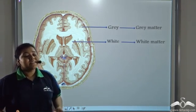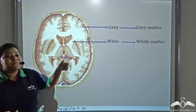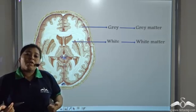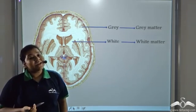And then there is the inner white matter which is made up of the axons of the neurons and hence it is white.